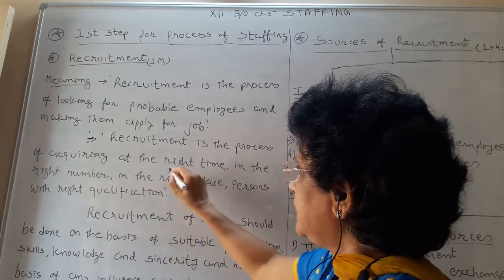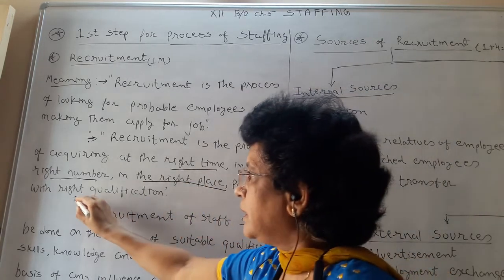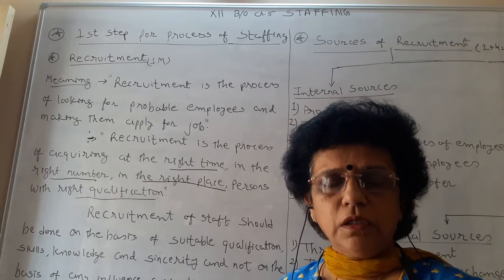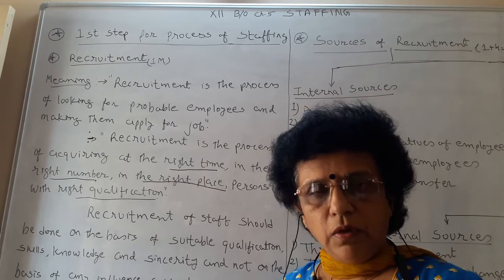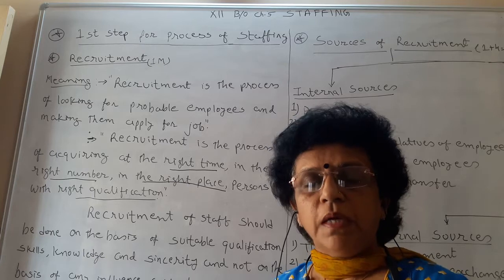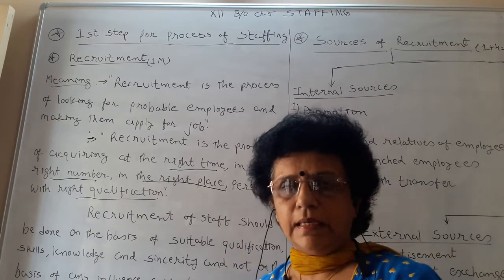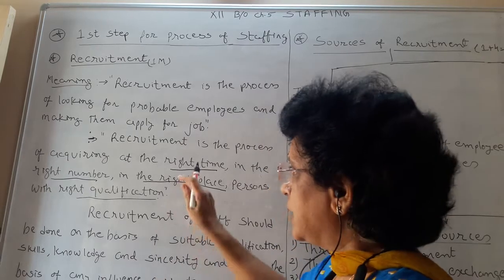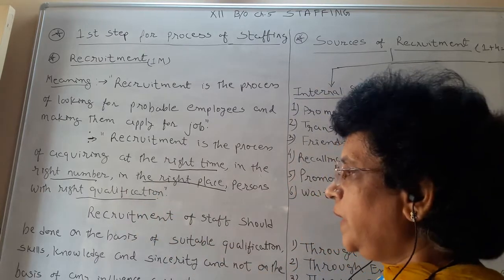The second form: recruitment is the process of acquiring, at the right time, the right number of people in the right place with the right qualifications. Your aim is to get the correct person for your job. There are ample members looking for a job, but we can't allow anybody to enter — their qualification, experience, potentials, qualities, and capabilities to perform the job, all these things are to be taken care of.